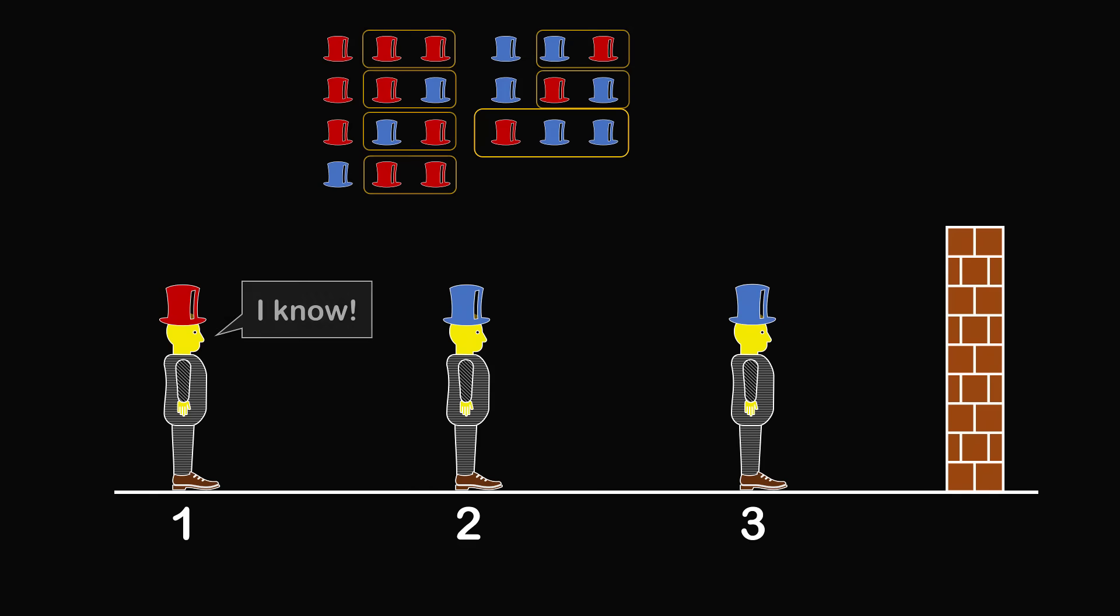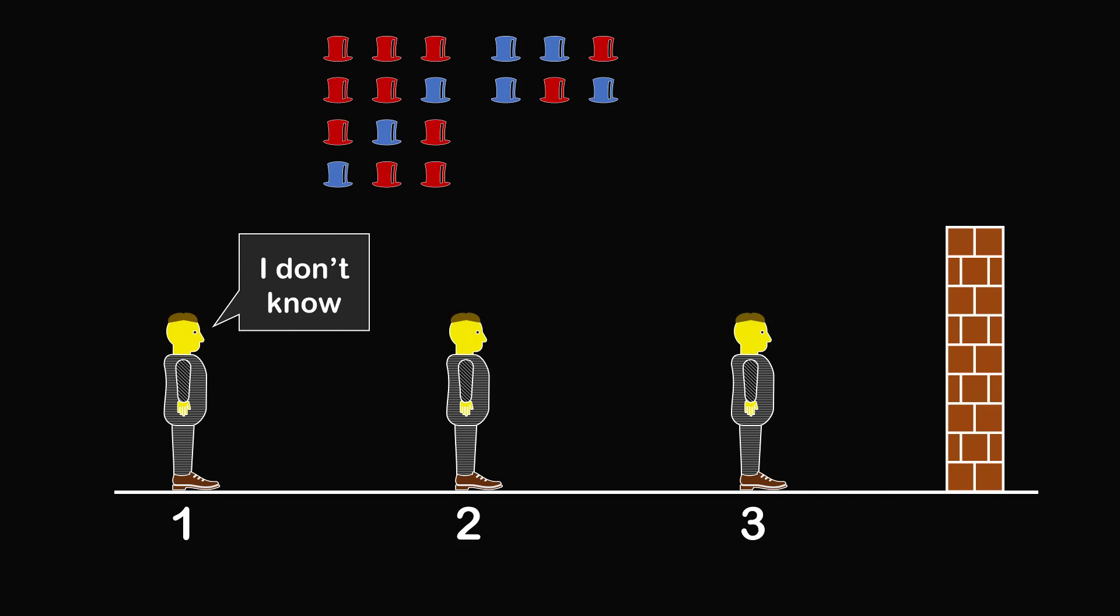But as it is, we know prisoner 1 replied, I don't know. So we can exclude this possibility. It's not possible that the hats placed were red, blue, blue. So there are only 6 cases to consider.